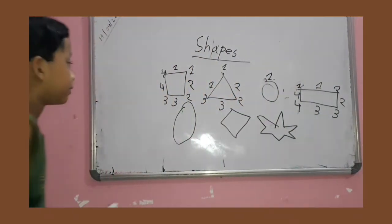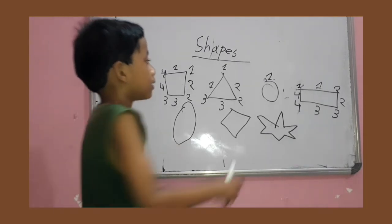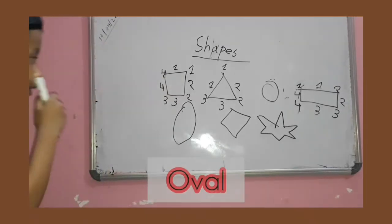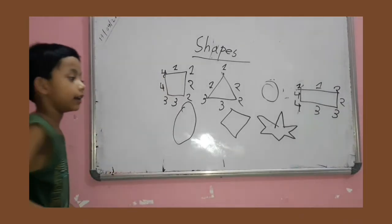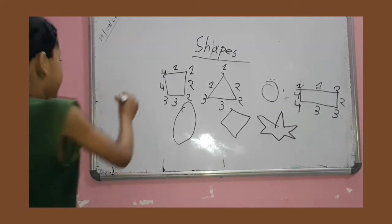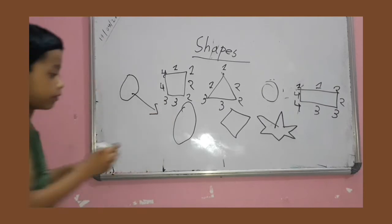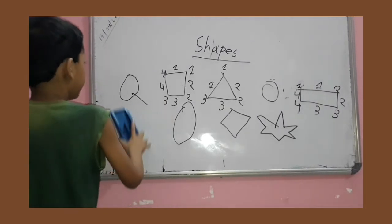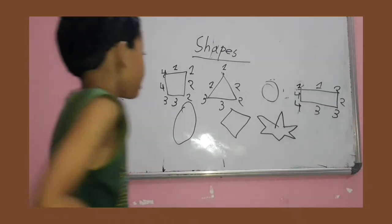Now, here, there are no sides in an oval. There are no sides in oval. Okay, that's because it looks like an egg. Look like this. This oval, it's an oval.